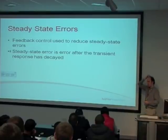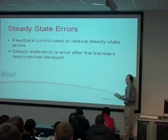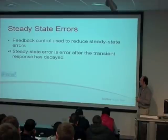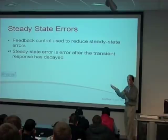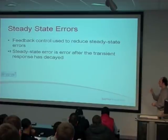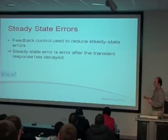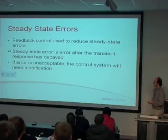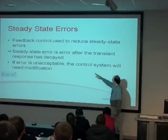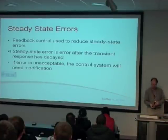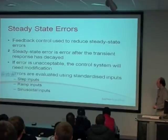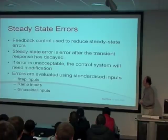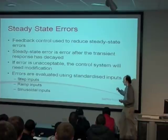Feedback helps reduce steady state errors, but you can still get errors in systems even with some feedback. We talk about steady state because that's after the transient has died away. With first and second order systems you generally get an exponential transient response - that could be oscillation or climbing to your endpoint. Once that's died away you're in what's known as steady state, as time goes to infinity. Errors are evaluated using standardised inputs: step inputs, ramp inputs, and sinusoidal inputs. Step and ramp inputs are covered today; sinusoidal inputs will be covered next week.